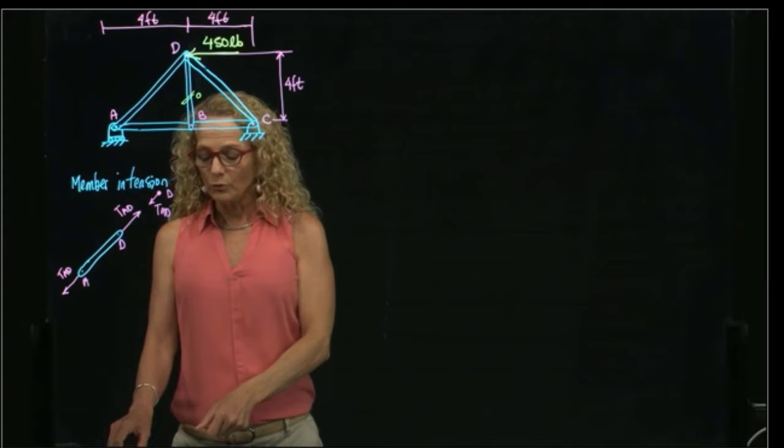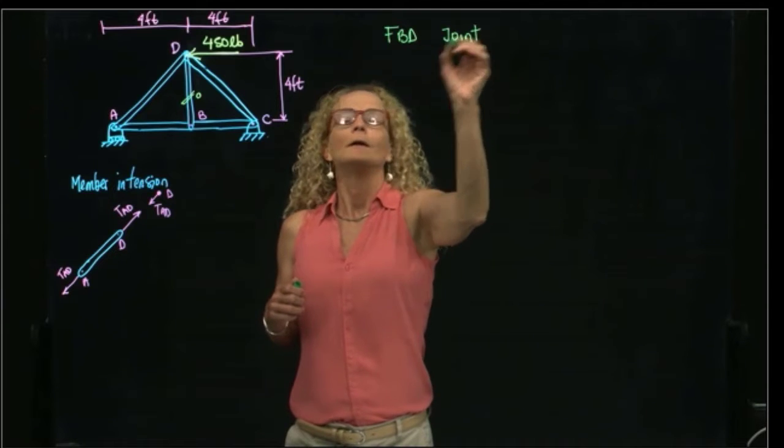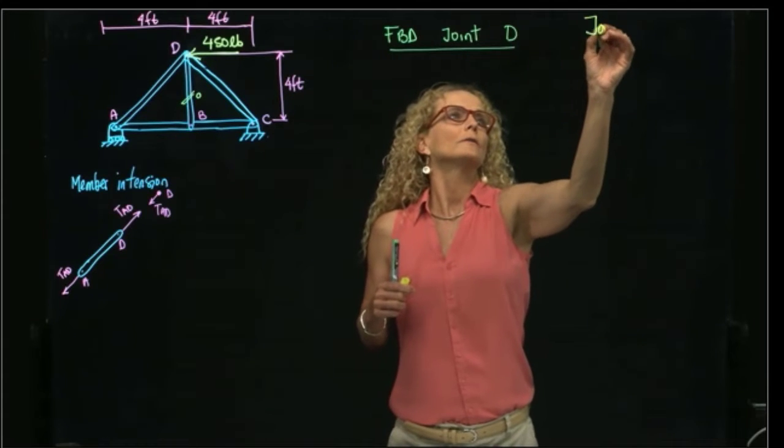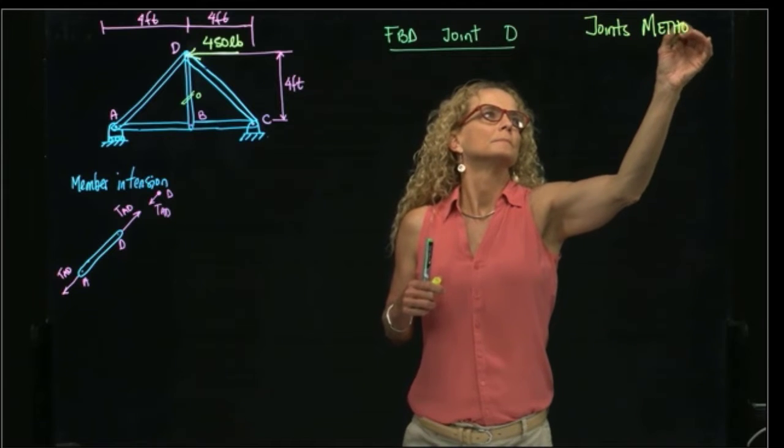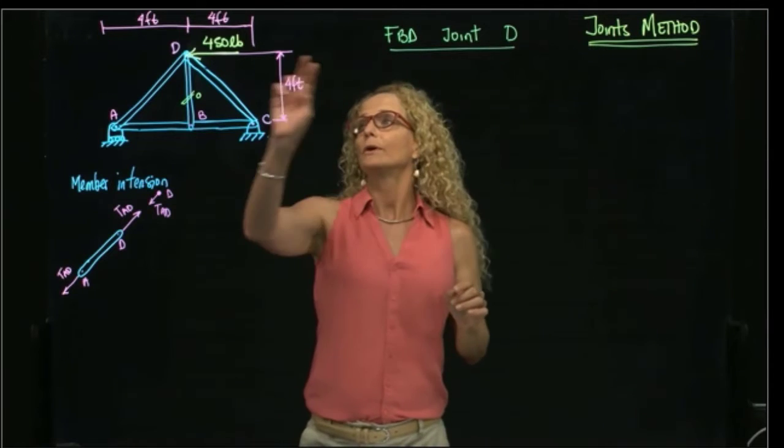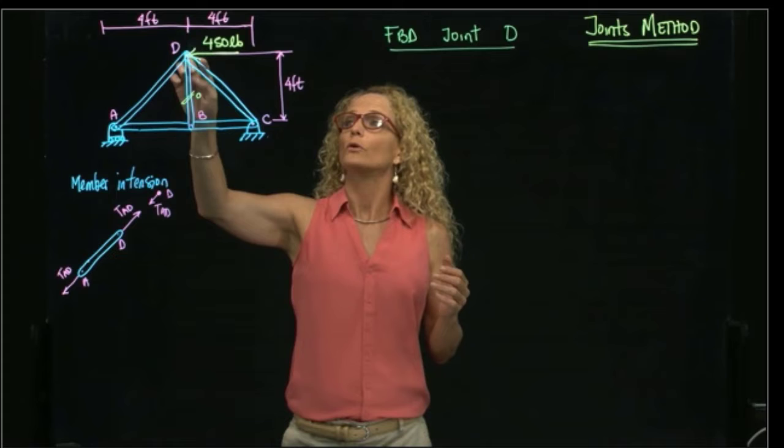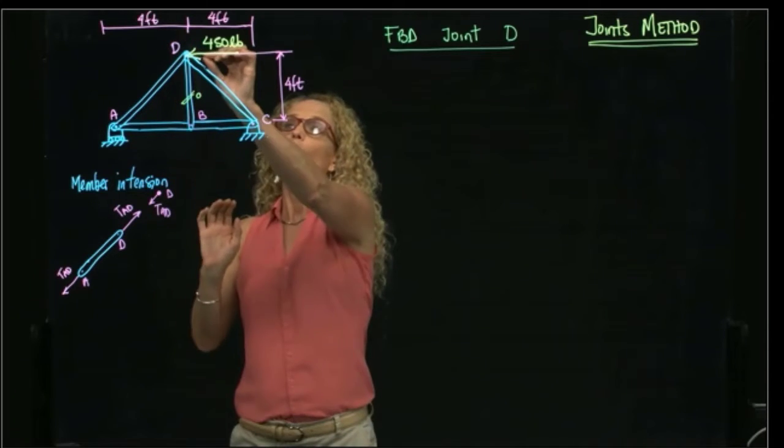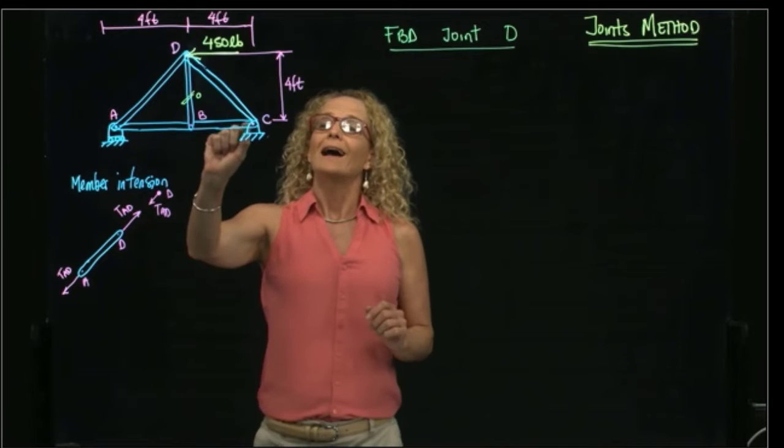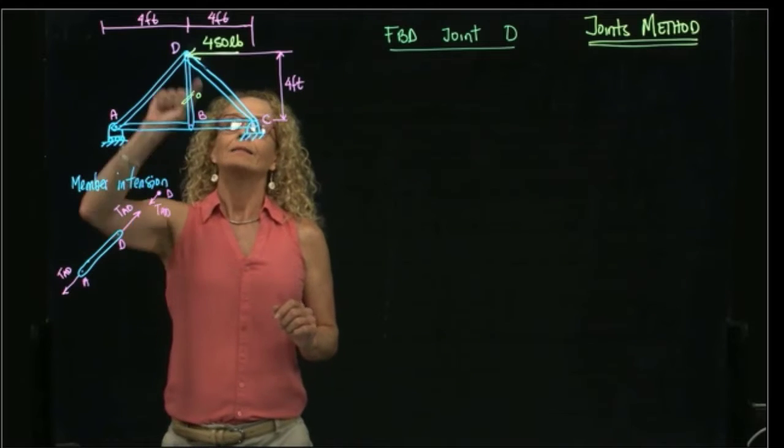Let's do the free body diagram of joint D. In this case, we are using the joints method. Why do we start in joint D? Because in joint D, since this is equal to zero, we have only two unknowns, because we have only two members that are concurrent at joint D. In this case, we have two members but one external force, and here we have two members and also two external forces. So we could not start at C or at A, therefore we start at D.